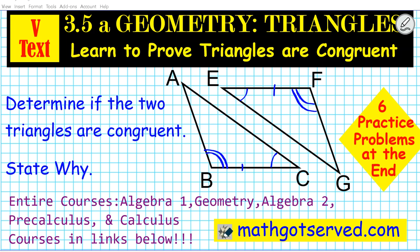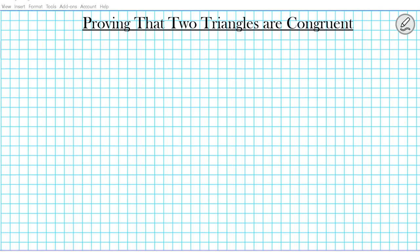To gain access to Algebra 1, Geometry, Algebra 2, Precalc and Calculus courses, take a look at the links in the description below or just visit our website at matgotserved.com. So how do you prove that two triangles are congruent? There are four sequences of corresponding congruent sides that can be used to accomplish this. Let's write them down.